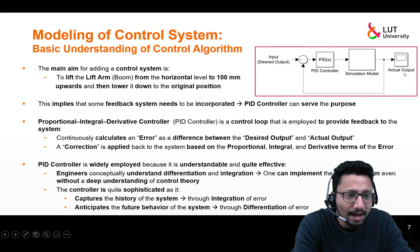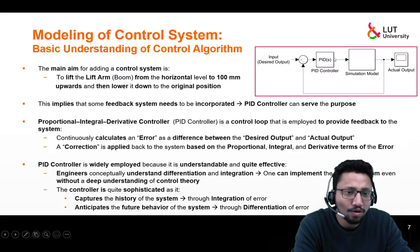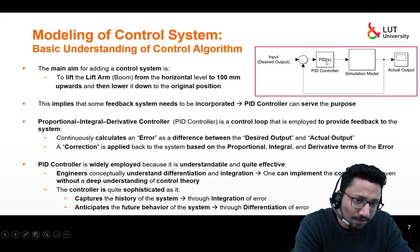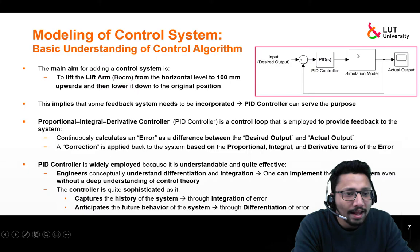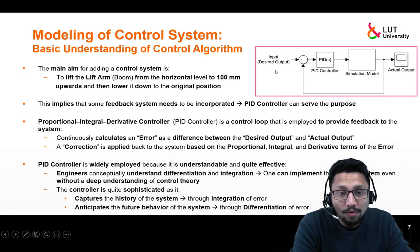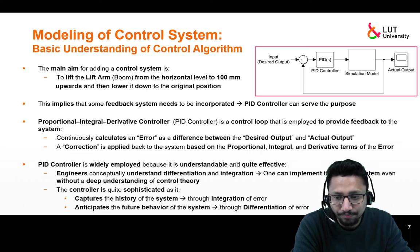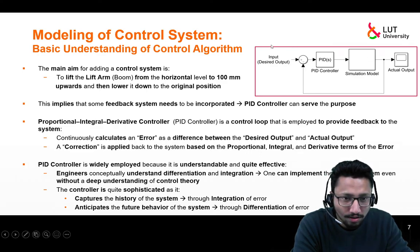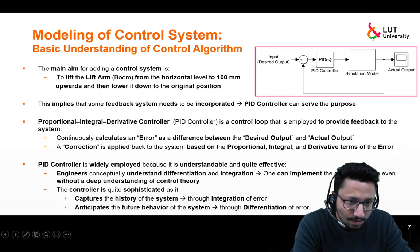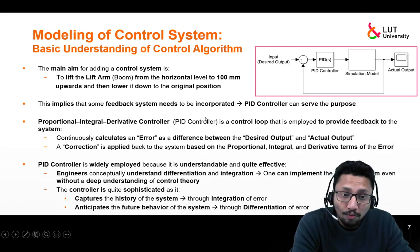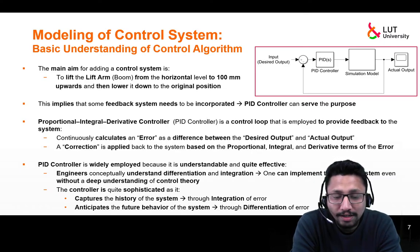The PID controller constantly calculates an error, which is the difference between the desired output and the actual output. This error is fed into the controller and it provides corrections based on the proportional, integral, and derivative terms. The simulation model processes this input and provides a new set of outputs. The main aim is to match the actual output with the desired output, which is provided as an input to the system.